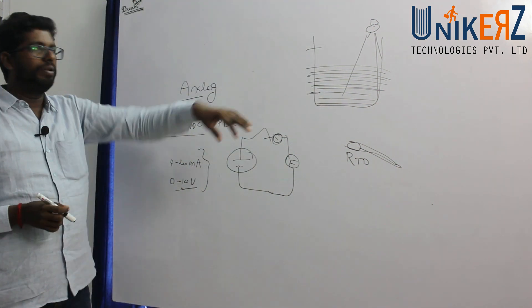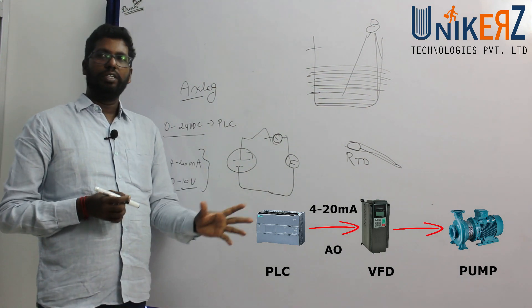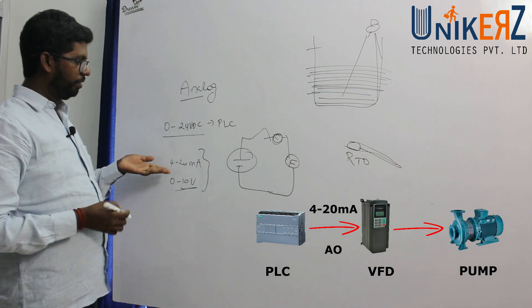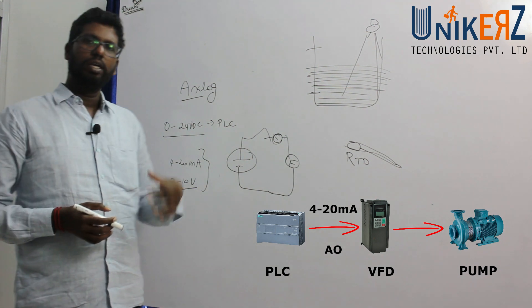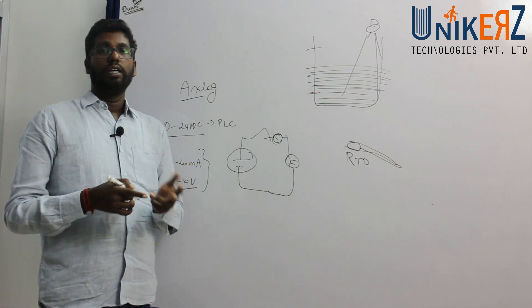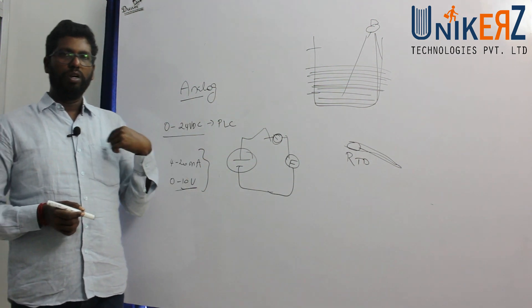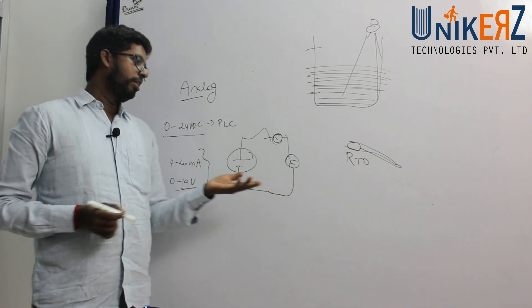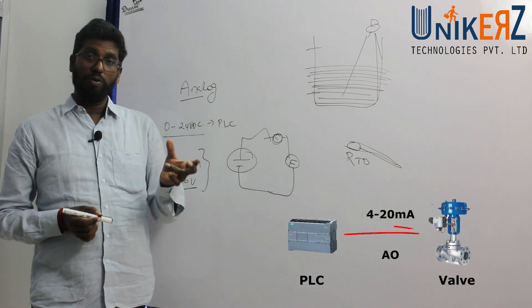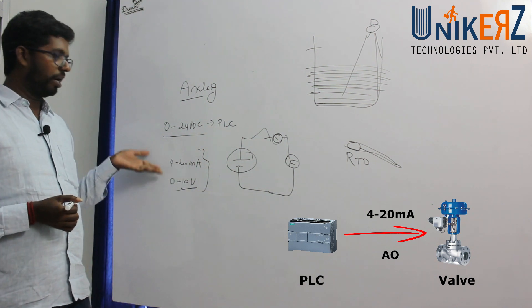For analog output, it is used to control a motor, a valve, or a pump — using 4 to 20 milliamps or 0 to 10 volts. For example, by changing the 4 to 20mA signal, we can control the speed of a lift or measure the position of a valve from 0 to 100 percent open or closed. These are analog inputs and outputs.